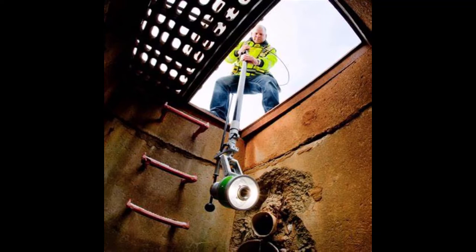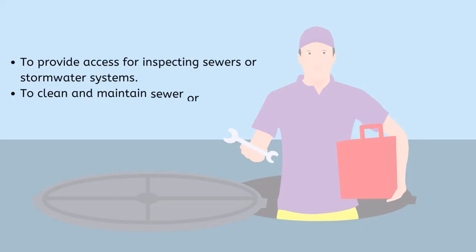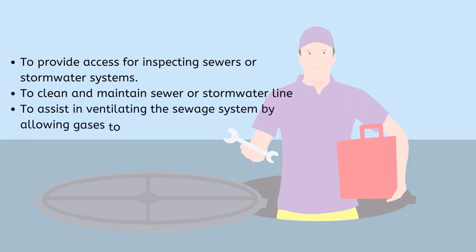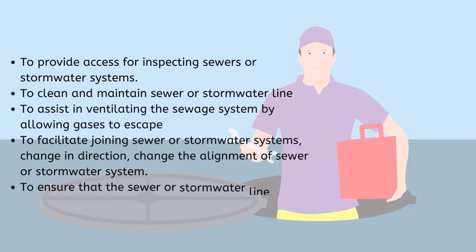The main functions of a manhole are to provide access for inspecting sewers or stormwater systems, to clean and maintain sewer or stormwater lines, to assist in ventilating the sewer system by allowing gases to escape, to facilitate joining sewer or stormwater systems, and to accommodate changes in direction and alignment of the sewer or stormwater.